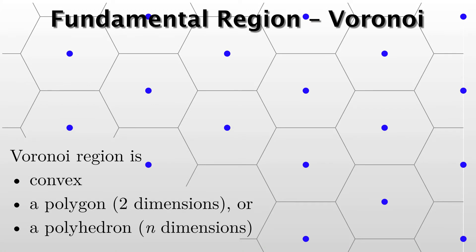So you'll notice that it has some properties. The Voronoi region is convex. The Voronoi region is always a polygon in two dimensions. What that means? It means it has straight sides, right?